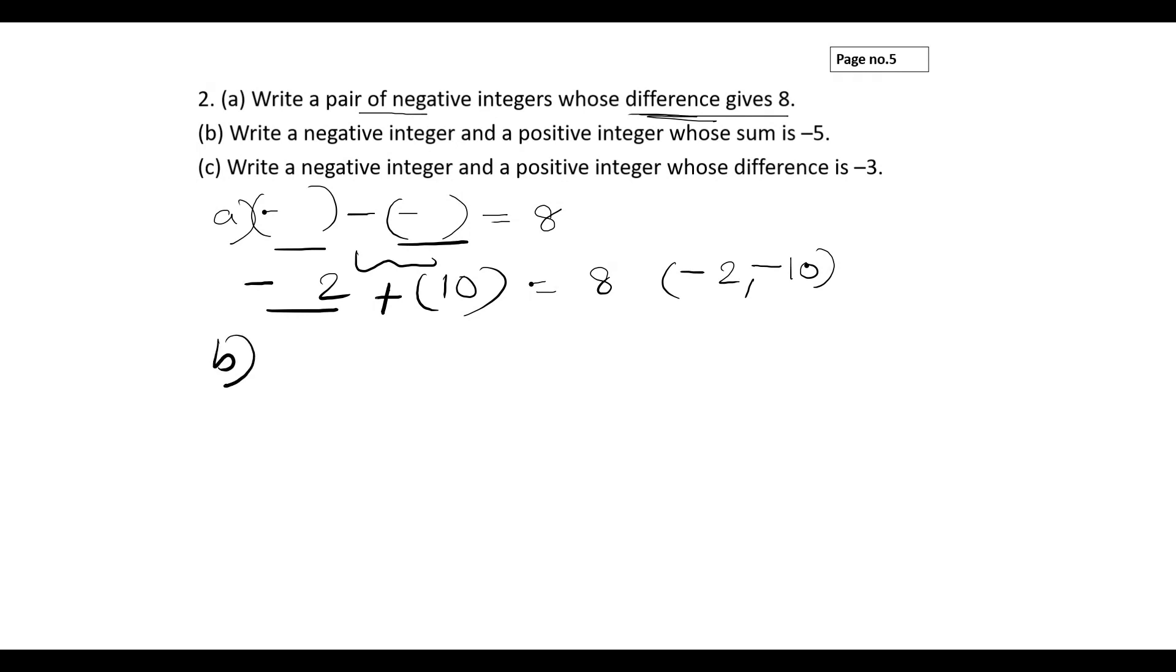Part b: Write a negative integer and positive integer whose sum is minus 5. So I have to consider two integers whose sum should be minus 5. First number I have taken is minus 10, second number is 5. If I add these two numbers, the result is minus 5. Since these two numbers have different signs, subtract it. 10 minus 5 is 5. Put the sign of the greatest number for the result, so it will be minus 5.